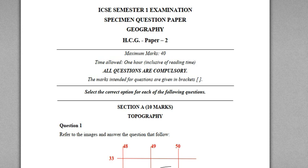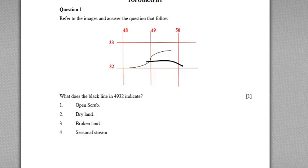In this video I am going to discuss the questions which came from the topographic section. There are 10 questions given by the council. Here is the first question — we can see a small diagram with northings, eastings, and a symbol. The question is: refer to the image and answer the question that follows. What does the black line in grid square 4938 indicate? Options are given.